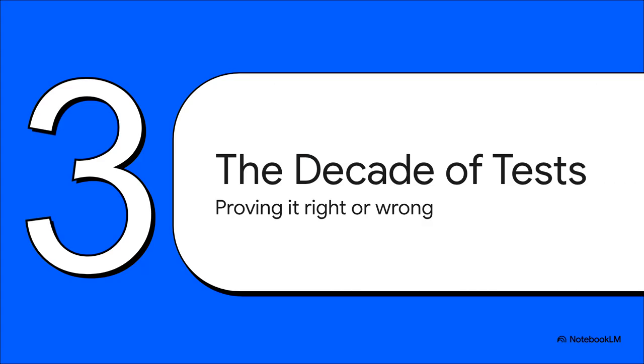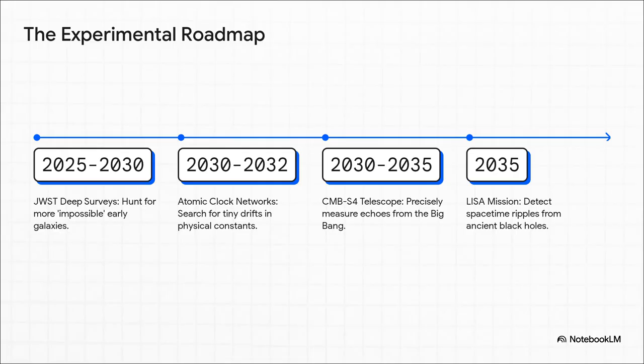This is all absolutely fascinating. But a truly great scientific theory does more than just explain a mystery after the fact. It has to make bold, testable predictions. And this theory has set up a series of high-stakes tests for the next decade that will either confirm it or break it completely. And here it is, the roadmap to either prove it or break it.